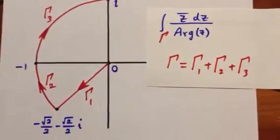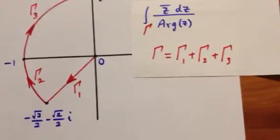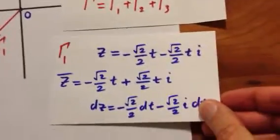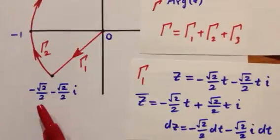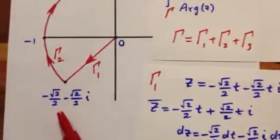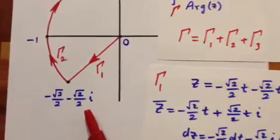So let's start with parametrizing gamma 1. Gamma 1 is a straight line from 0 to minus square root of 2 over 2 minus square root of 2 over 2 i.